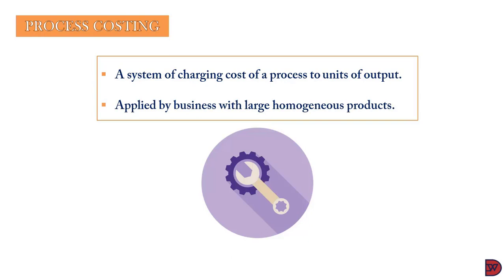Process costing is mainly applied by businesses that manufacture homogeneous or identical products on a larger scale. When we talk about homogeneous products, we are referring to goods that cannot be distinguished from one another, such as bottled water, biscuits, pens, etc. These products all receive the same level of activity — the same level of material, the same level of labour participation, and the same level of overheads in the process.